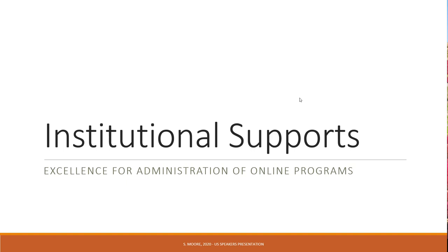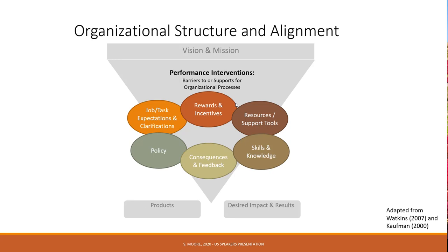These are the things that administration and leadership can do to effectively support quality online learning. This comes from a performance improvement body of research looking at what features of a workplace organization — in this case schools — are either barriers to or supports for organizational processes and quality performance. We've found this shakes out into six major categories: job or task expectations and clarifications, rewards and incentives, resources or support tools, skills and knowledge, consequences and feedback, and policies. You'll want to tend to each of these to get your system aligned to really support online learning and teaching.